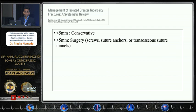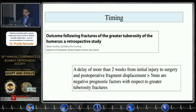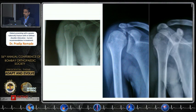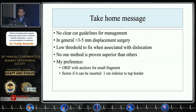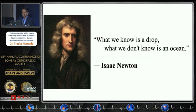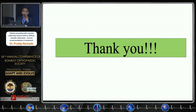Timing is important: a delay of more than two weeks can cause harm, and an innocuous-looking fracture that was delayed resulted in the greater tuberosity migrating far proximally. One article notes that greater tuberosity fracture is a fracture of necessity, and patients with dislocation tend to have poor results, so there should be a low threshold for fixation. The take-home message: there are no clear-cut guidelines; in general, more than 3–5 mm displacement should be fixed; low threshold if associated with dislocation; no one method is superior to others. As Isaac Newton said, 'What we know is a drop and what we don't know is the ocean' — truly applicable to this fracture.